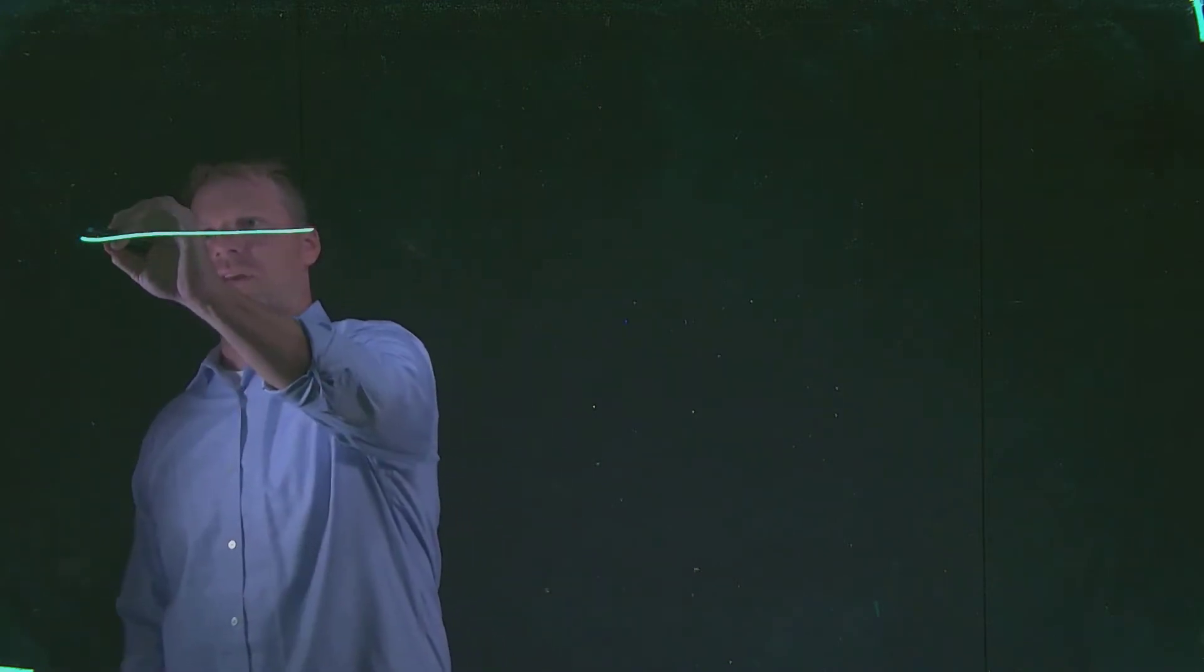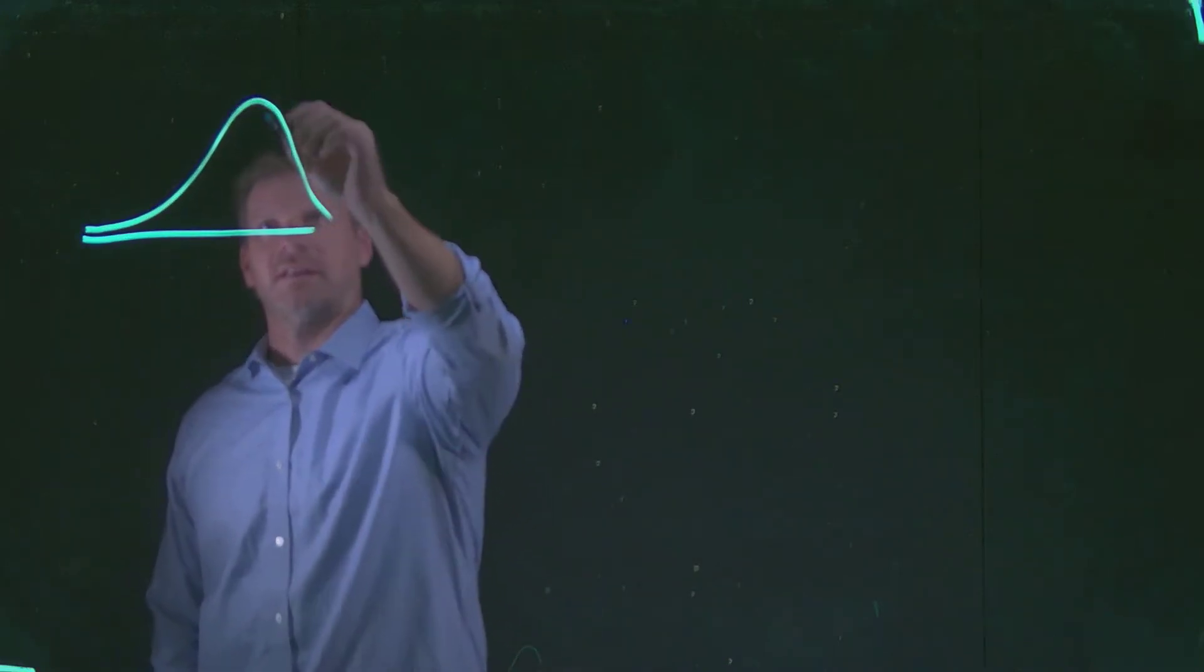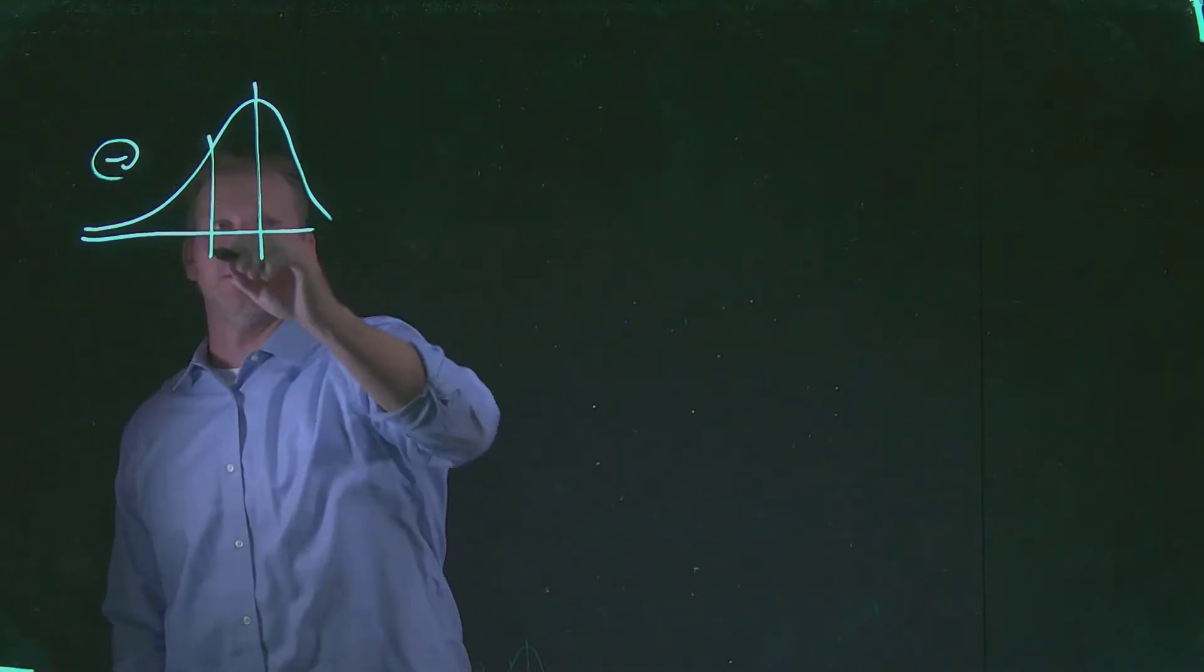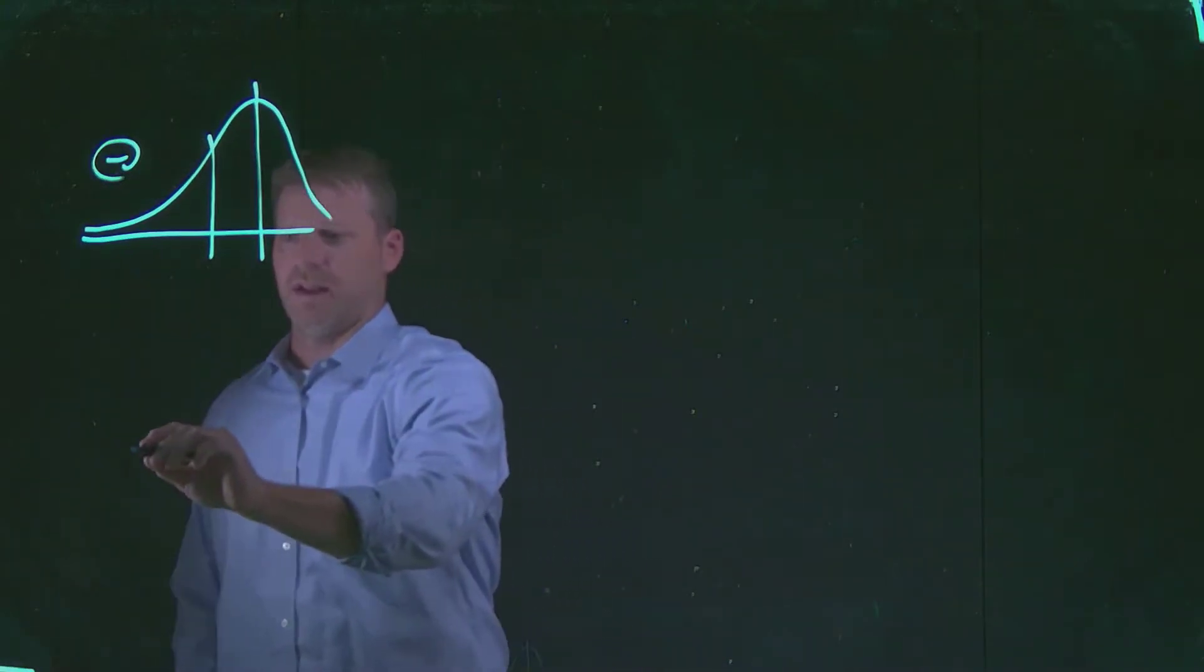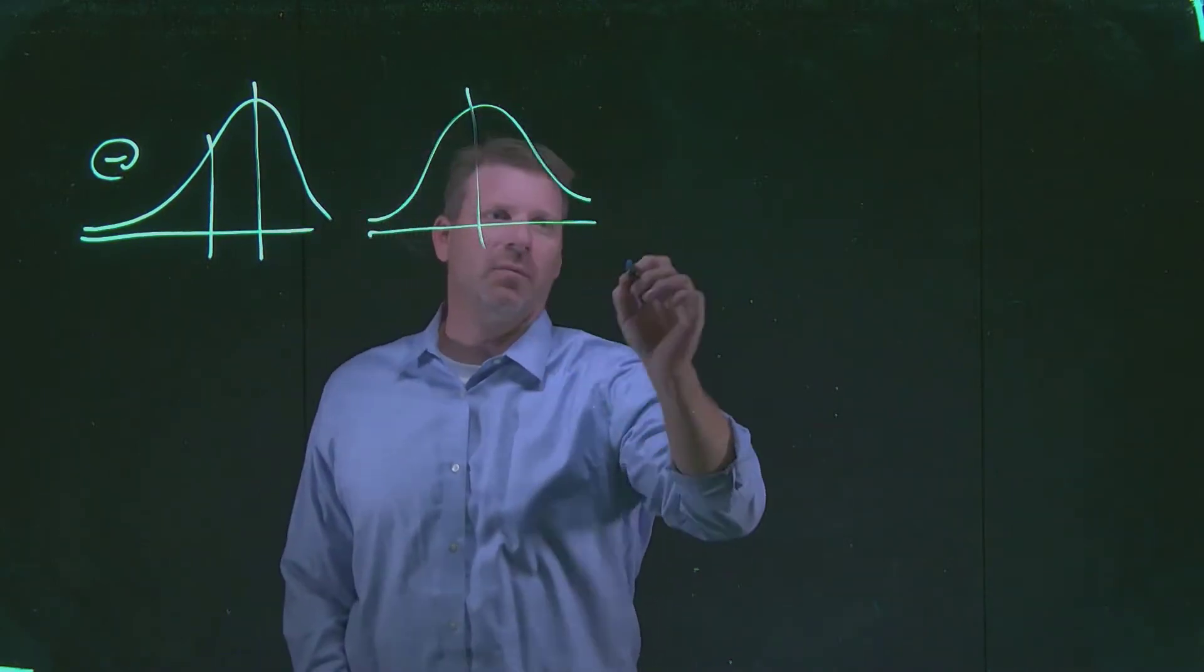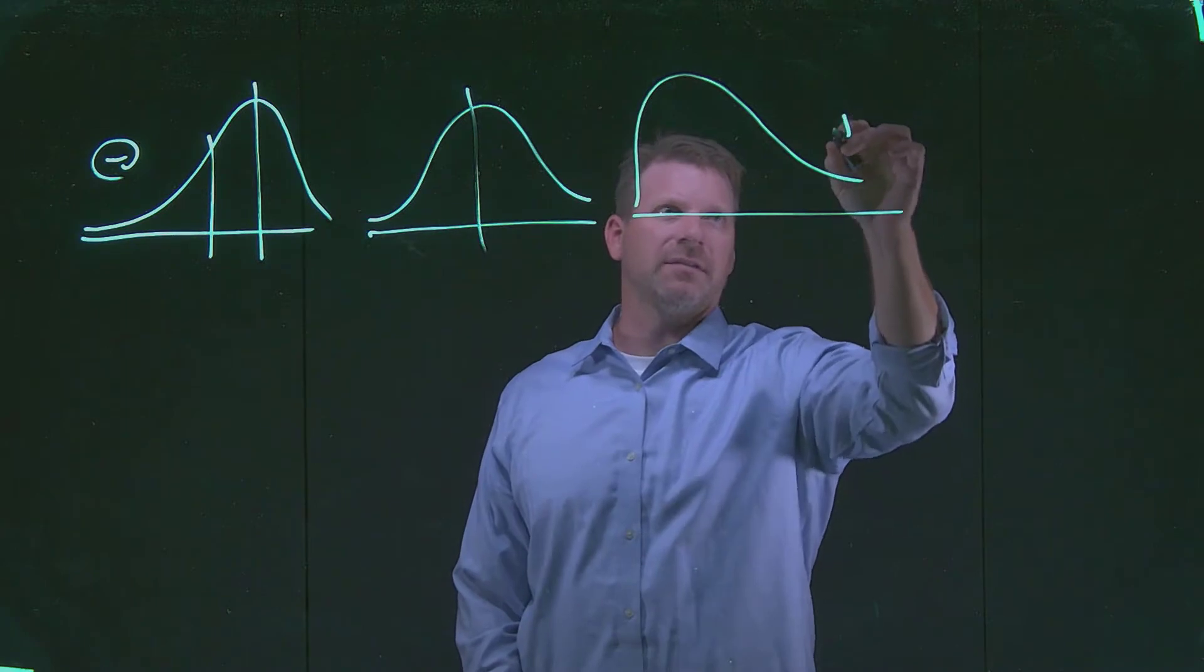When we think about skewness, we have different conditions that can exist. We can have a distribution that is negatively skewed, distributions that are symmetrical, and distributions that are positively skewed.